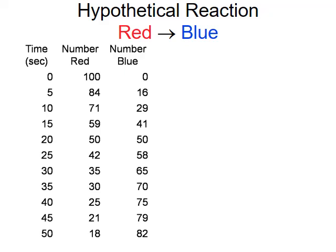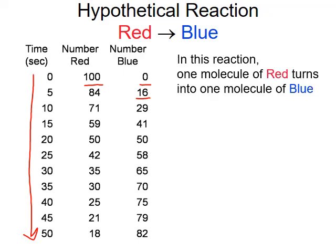Let's apply these concepts to a hypothetical reaction of a red molecule turning into a blue one. We have a table showing how the amounts of red and blue molecules change over a 50-second time interval. At time zero, we start with 100 red molecules and zero blue. During the first five seconds, we form 16 blue molecules. Since it's a one-to-one relationship, for every blue molecule that forms, we lose one red molecule, so the count for red drops from 100 to 84.